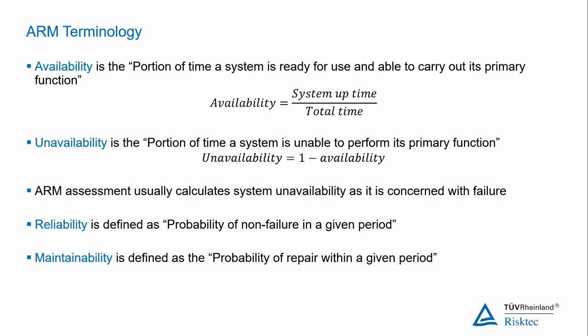The final ARM term is Maintainability, which is defined as the probability of repair within a given period. Maintainability covers a wide range of activities including access, disassembly, modular construction, fault finding, mobilisation of spares and repair time.